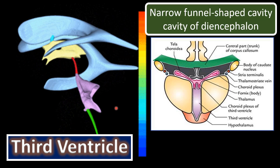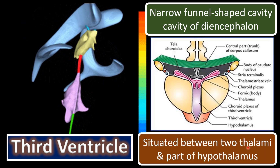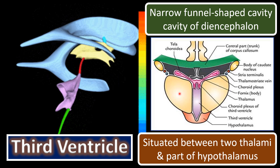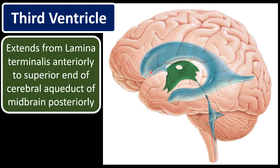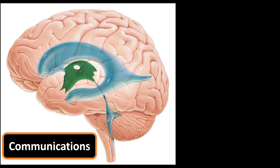The third ventricle is a narrow funnel-shaped cavity of the diencephalon, situated between the right and left thalamus and hypothalamus. It extends from the lamina terminalis anteriorly to the superior end of the cerebral aqueduct of Silvius of the midbrain posteriorly. It is lined by ciliated columnar epithelium and ependymal cells, and is traversed by the interthalamic adhesion.